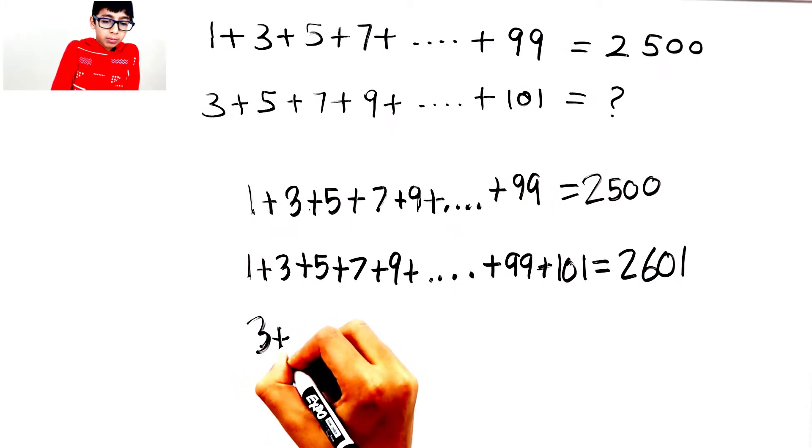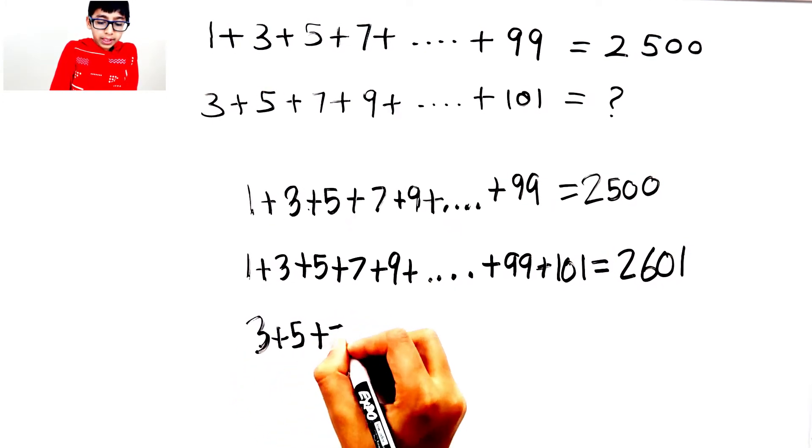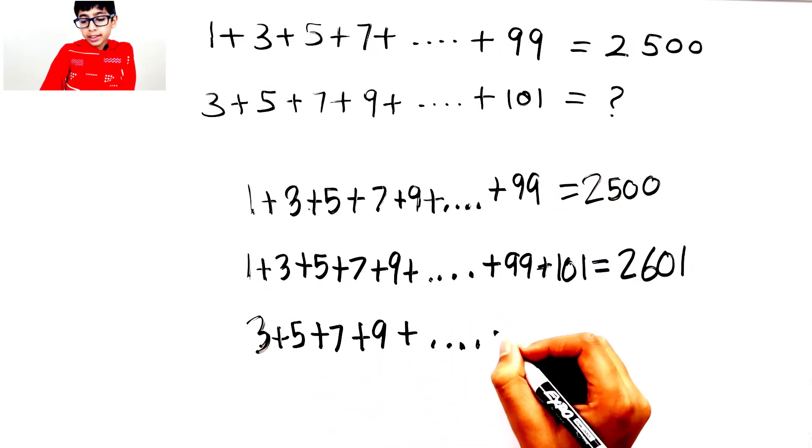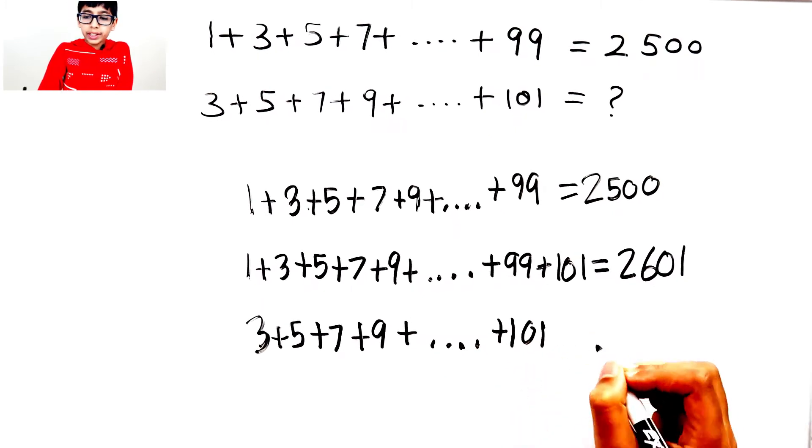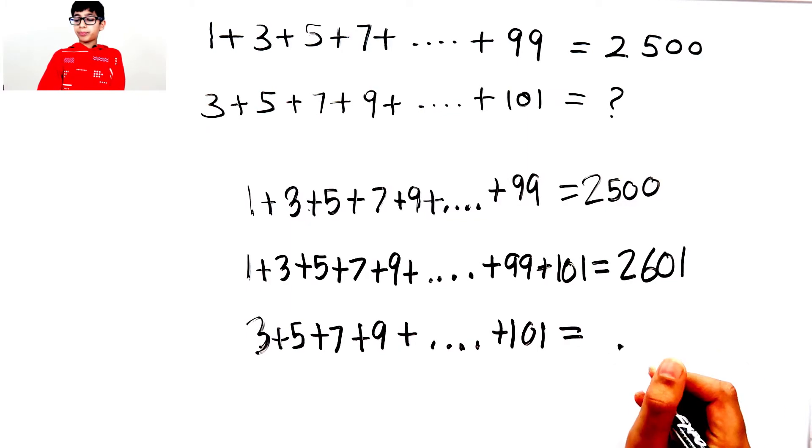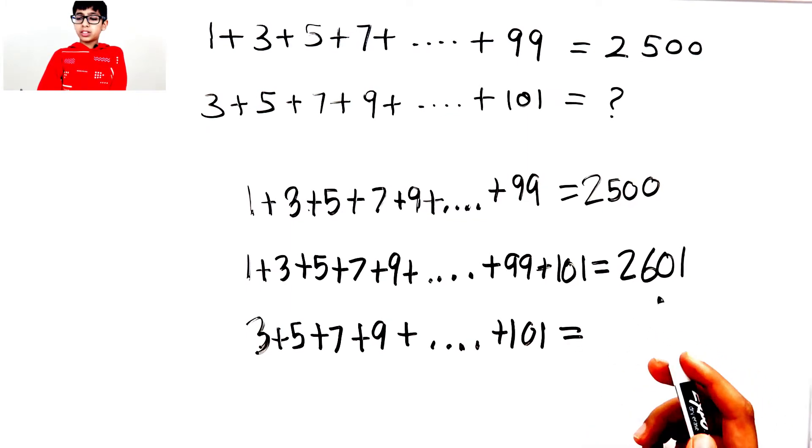2601 minus 1 equals... So look, 2601—both of these sequences are the same. The only difference is...